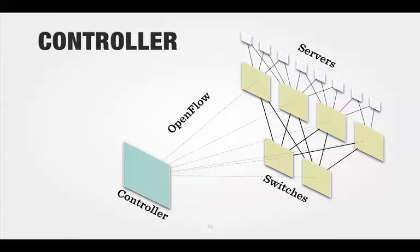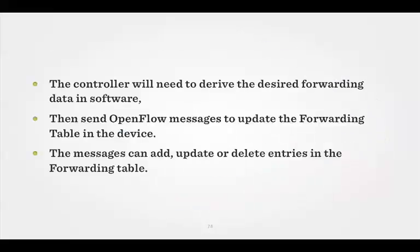Your controller sits to the side of your network. Here I've created a plane on the right-hand side where the servers and switches are all connected together. Your controller will need to derive the desired forwarding path in software, and then send OpenFlow messages that update the forwarding table in the networking device. The messages the controller sends to the switches either add, update, or delete entries in the forwarding table. The forwarding table itself does a match, action, and count.